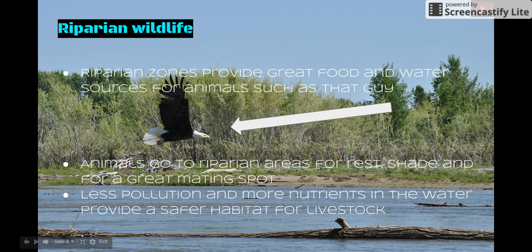Here we are at Riparian Wildlife. Riparian Zones provide food and water for animals. Animals like to go to Riparian Zones to rest, for shade, and to mate. Less pollution in the water also makes it a safer habitat for livestock.